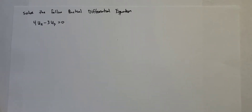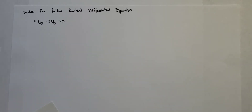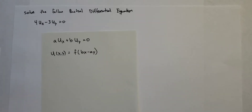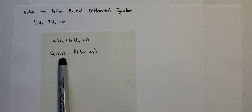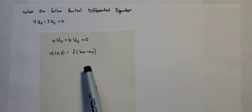Hey everyone, welcome back. Earlier we saw how to solve this type of problem — a partial differential equation with constant coefficients set equal to zero, which makes it homogeneous. We did it the long way using the coordinate method. Now remember, any time you have constant coefficients, you can use this equation where your answer is f, a function evaluated at bx minus ay.